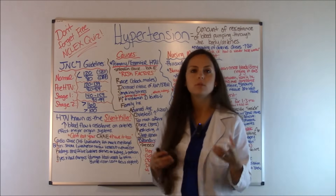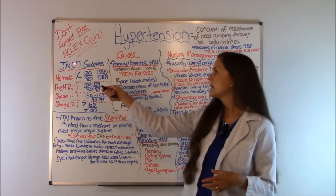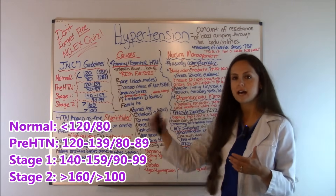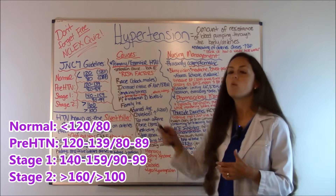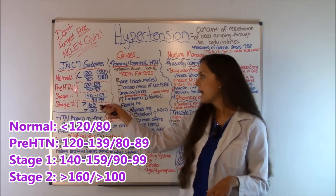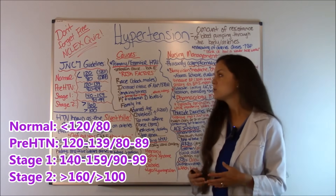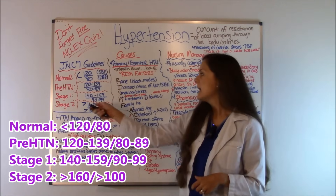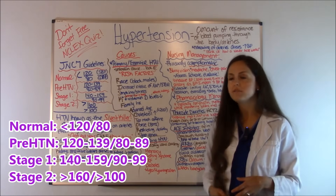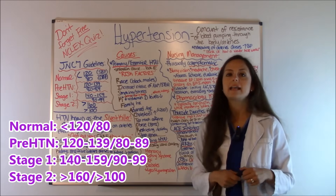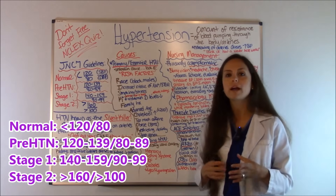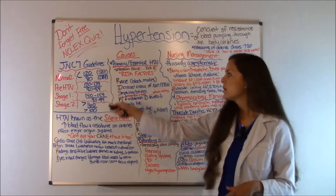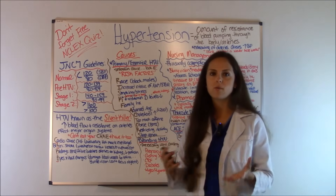According to the Joint National Committee, a normal blood pressure is 120 over 80 or less. Prehypertension is anywhere from 120 to 139 systolic or 80 to 89 diastolic. Stage 1 is 140 to 159 systolic and 90 to 99 diastolic. Stage 2 is anything greater than 160 systolic and anything greater than 100 diastolic. That's a guideline to help you as a nurse figure out where your patient is.